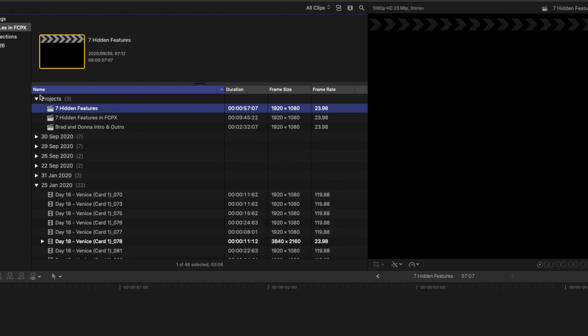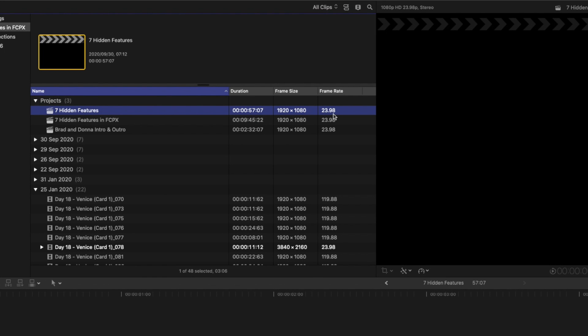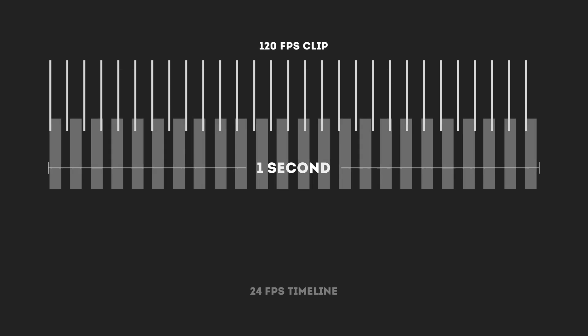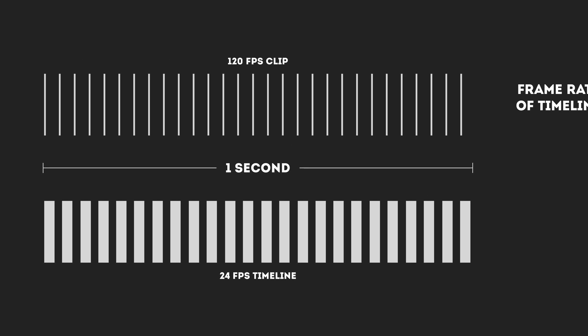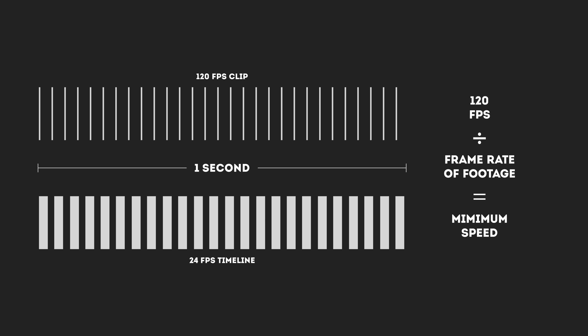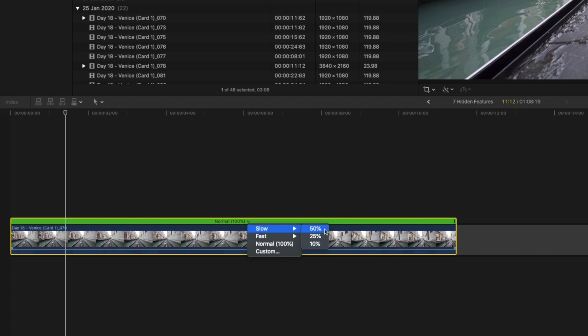To get the most out of this feature, you'll need to know a little bit about frame rates and slow motion footage. Let's assume you have a 23.976 frames per second timeline and you put a 120 frames per second — technically 119.88 frames per second — clip on the timeline. Final Cut Pro is going to drop frames to make one second of 120fps footage equal one second on a 24fps timeline. If you take your timeline's frame rate divided by the footage frame rate, you get the minimum speed to slow footage down without dropping frames — which for 120fps on a 24fps timeline is 20%. The closest preset speed is 25%, but you could go to a custom speed of 20%.